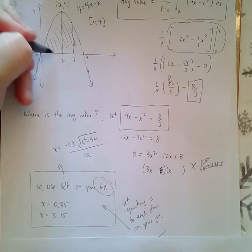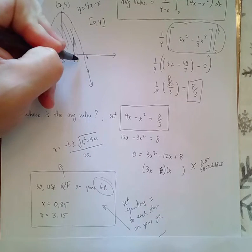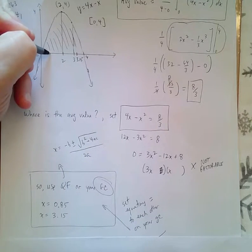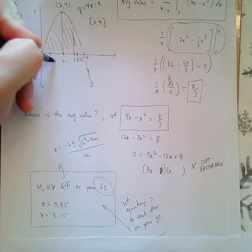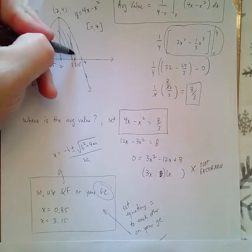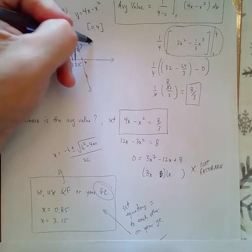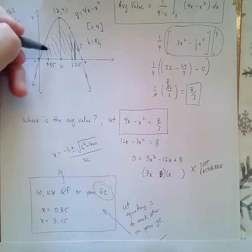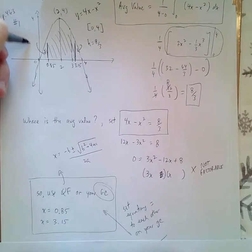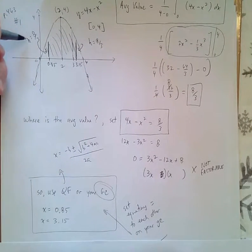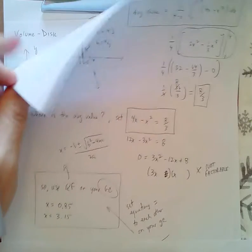These are the x values. So 3.15 and 0.85, that's where the heights are 8 thirds. And that's what I'm trying to get at with this assignment. I think you'll be all right. I mean, this assignment's pretty straightforward, and that's average value.